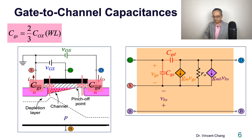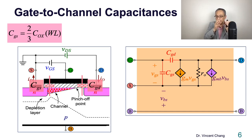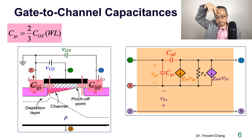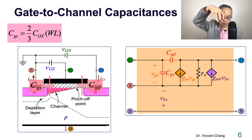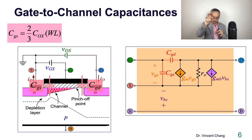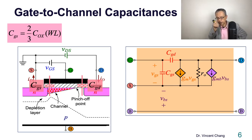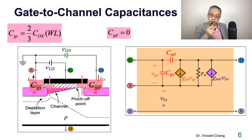On the source side, two-thirds of the gate capacitance will be attributed to the gate-to-source capacitance CGS. But at the drain end, since it's pinch-off, no charge accumulates at the drain end — so ideally the gate-to-drain contribution from the channel is zero. Why zero? Because it's pinch-off.